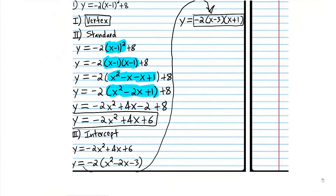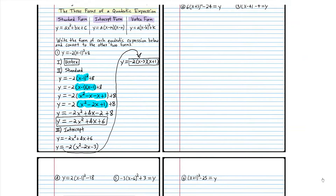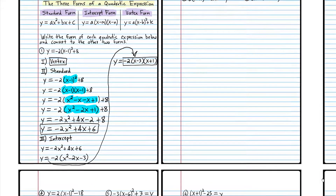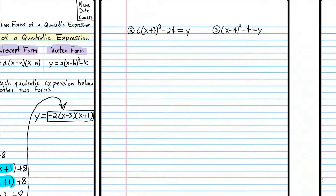So again, we did three things: first, we identified the form of the original expression as vertex form. Then we converted it to standard form. Then we took standard form and converted it to intercept form. Let's do a couple more of these before you try one on your own.